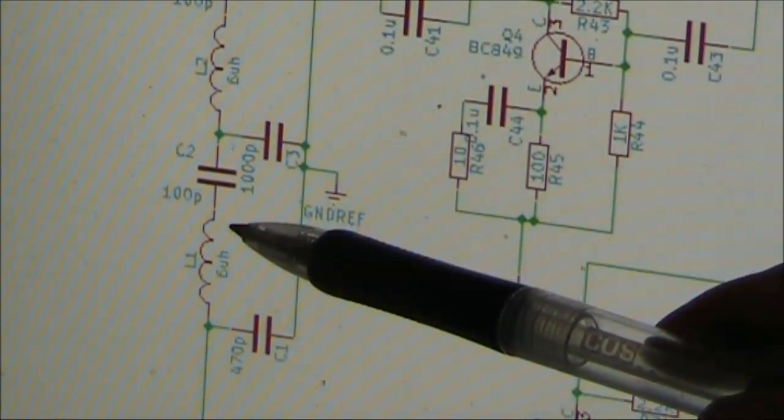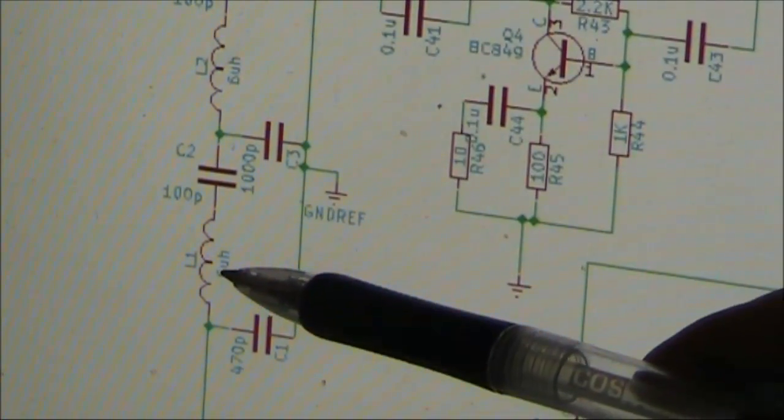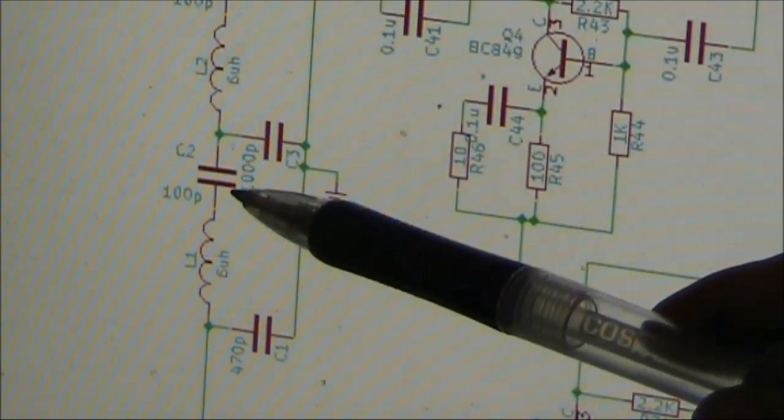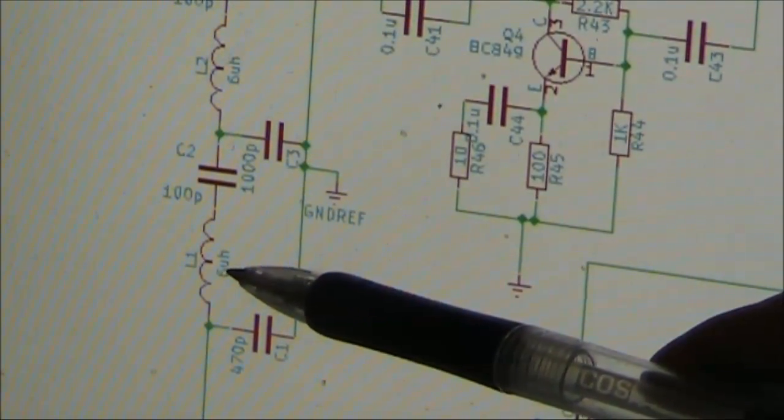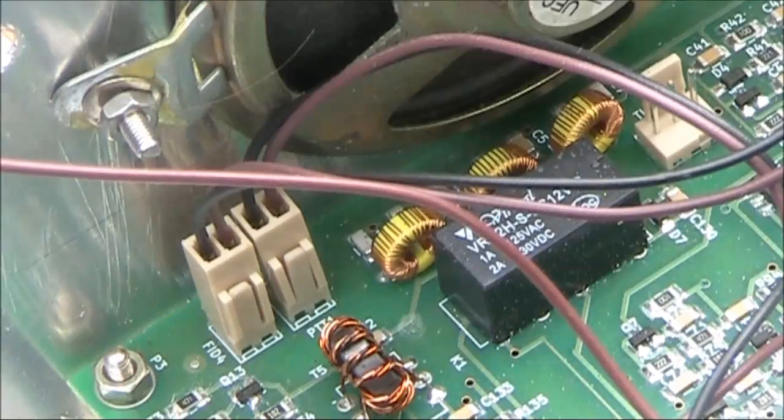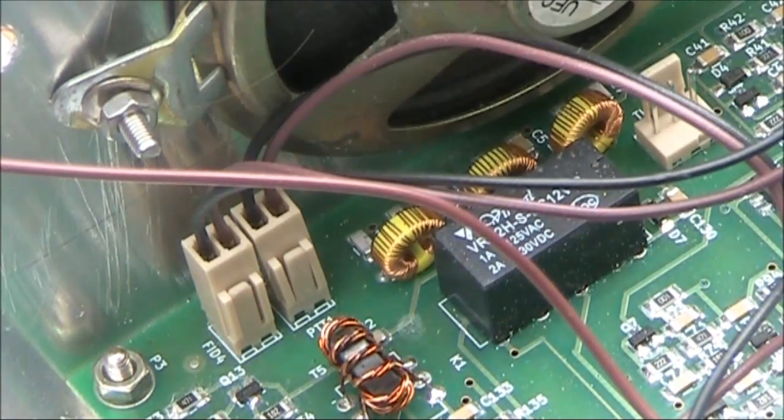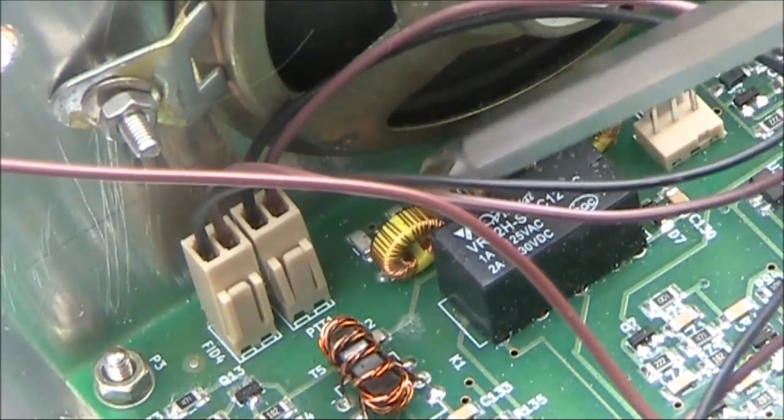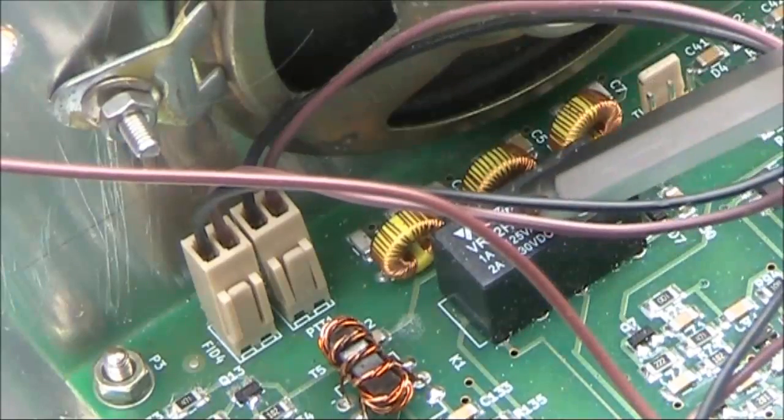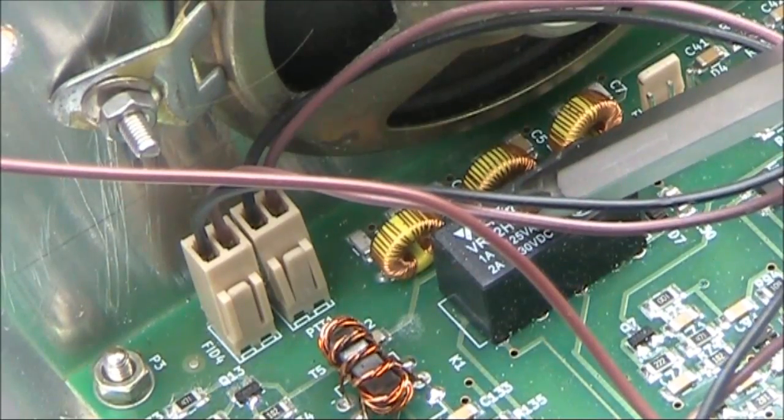So the first thing I did, thinking that the problem could either be L1 or C2, was to take L1 out of the circuit. Now, just in case you're following this on your own BitX, L1, L2 and L3 are just behind the relay, which goes from transmit to receive.